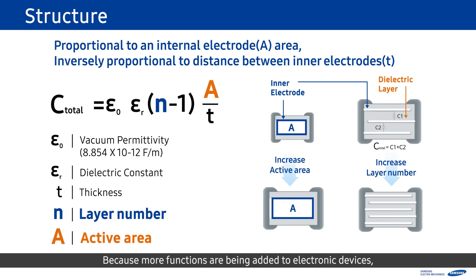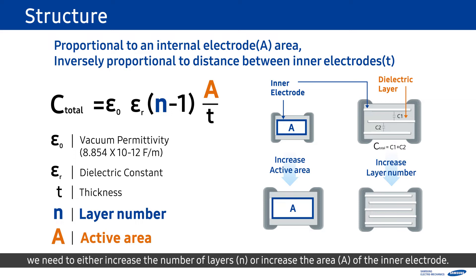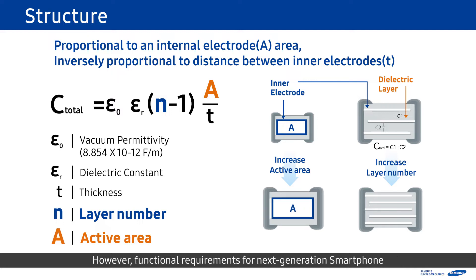Because more functions are being added to electronic devices, high capacitance MLCC demand is increasing. To make an MLCC with high capacitance, we need to either increase the number of layers N, or increase the area A of the inner electrode. If we increase inner electrode area A, the MLCC needs to likewise increase in size.